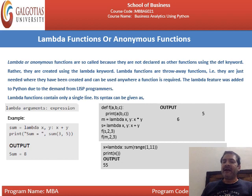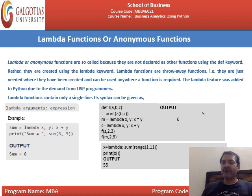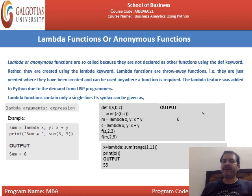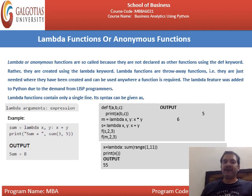Lambda functions are throwaway functions — they are just needed where they have been created and can be used anywhere a function is required. The lambda function was added to Python due to demand from Lisp programming, which stands for list processing. Lambda functions contain only a single line. The syntax is: lambda arguments : expression.